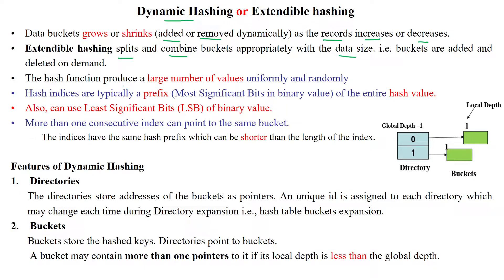The hash function is used to produce a large number of values with two properties: uniform data distribution and random data distribution. Hash indices are typically a prefix — that is, the most significant bits in the binary value of the entire hash value. Sometimes we may use the least significant bits of the binary value. So we can use either MSB or LSB of the binary value as an index.